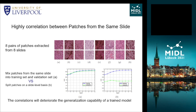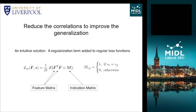To have a better insight, we conduct two experiments. First, we mix patches from the same slide into the training set and validation set. For the second experiment, we split patches on a slide-level basis, meaning patches from the same slide will not co-exist in training and validation sets at the same time. From the two figures on the right, we can see that mixing patches from the same slide into training and validation sets makes the performance on the validation set very similar to the performance on the training set. However, this correlation is assumed to decrease the generalization capability of a trained model. This is mainly because there would be hundreds or thousands of patches copied from one single slide, and these patches share significant features.